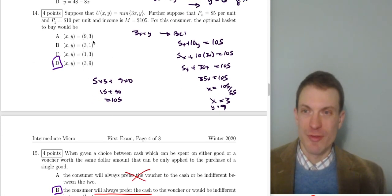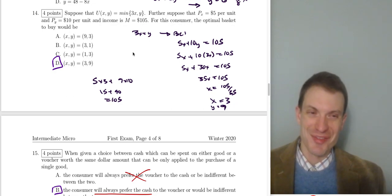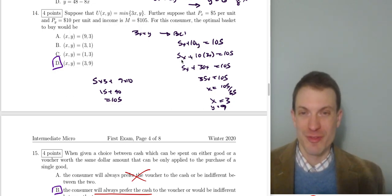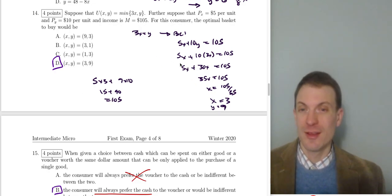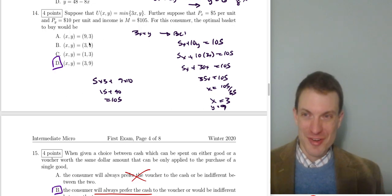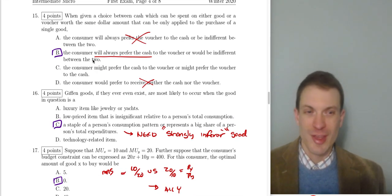Question fourteen: utility = min(3x, y), Px = 5, Py = 10, income = 105. Replace the comma with an equals sign: 3x = y. Substitute into the budget constraint: 5x + 10(3x) = 105, so 35x = 105, giving x = 3 and y = 9. Alternatively, you can plug the multiple choice options into the utility function and budget constraint — options A and B get ruled out immediately, C is feasible but inefficient, so the answer is D: (x, y) = (3, 9).